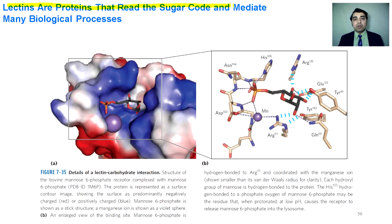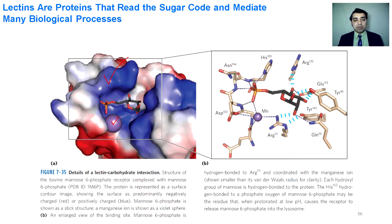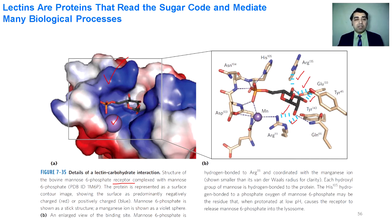Another example is the mannose-6-phosphate receptor. The mannose-6-phosphate structure fits inside the active site of this enzyme, with manganese as a cofactor. Mannose-6-phosphate forms hydrogen bonds with several amino acids present inside the mannose-6-phosphate receptor at at least five positions, demonstrating the specific interaction between proteins and monosaccharides.